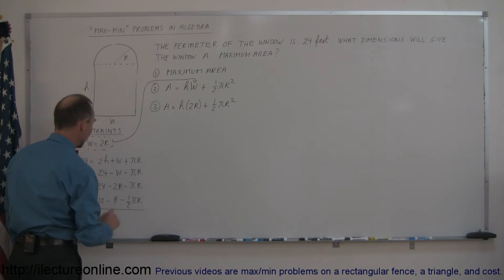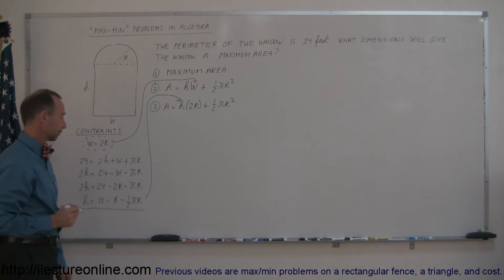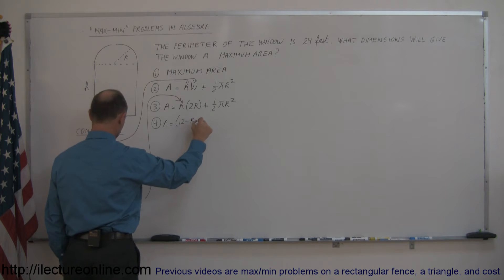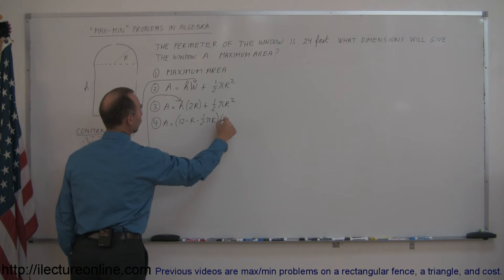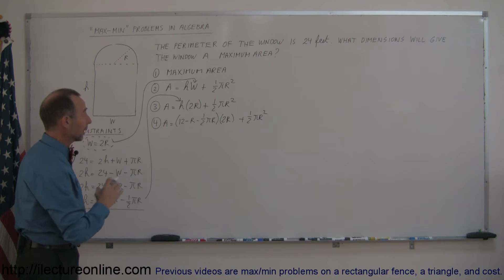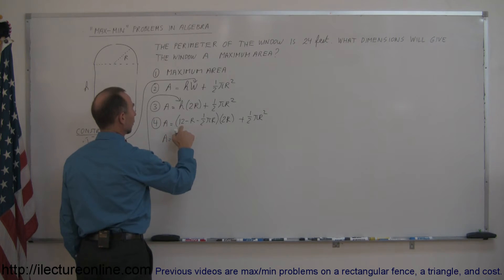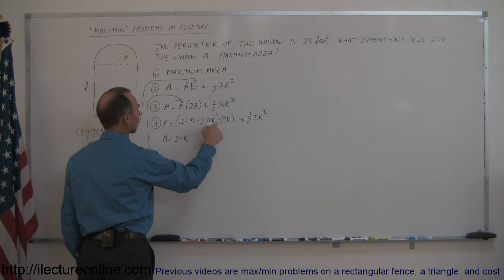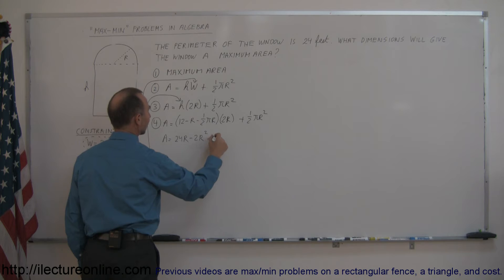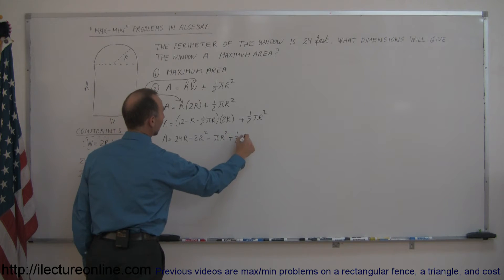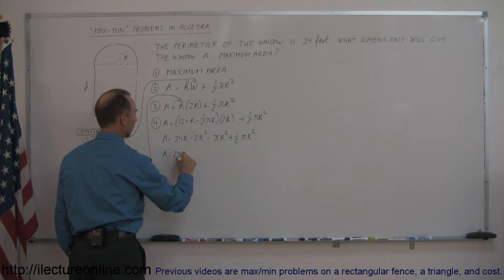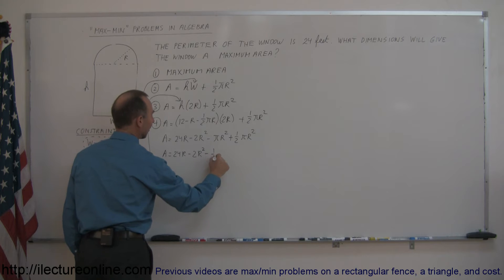This allows us to substitute that into the equation to get rid of H. The area equals (12 minus R minus one-half πr) times 2R, plus one-half πr². Expanding: 12 times 2R is 24R, minus R times 2R is minus 2R², and minus one-half πr times 2R gives minus πr². Then plus one-half πr². Combining the last two terms, the area equals 24R minus 2R² minus one-half πr².